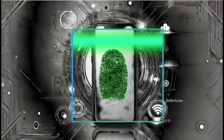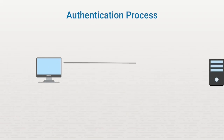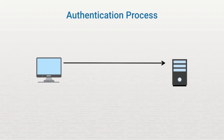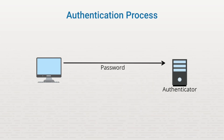An authentication protocol is the method used to exchange authentication credentials. It defines the type of credentials that are accepted as identification. Say we have a computer that wants to connect to a server that requires authentication. The server, sometimes called the authenticator, accepts and verifies device credentials. One simple way to authenticate is for the authenticator to ask who you are and what your password is. Early authentication protocols were nothing more than this.